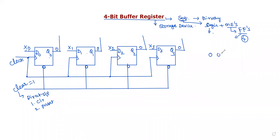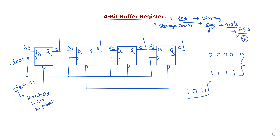The total combinations are from 0,0,0,0 up to 1,1,1,1. Now suppose we want to store the data 1,0,1,1. We apply this as the present input data — let's call it X. This external input data X is applied to the register.